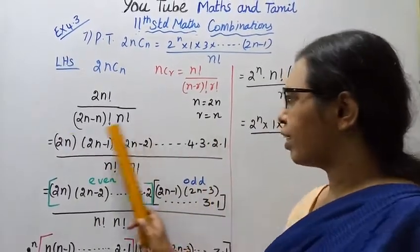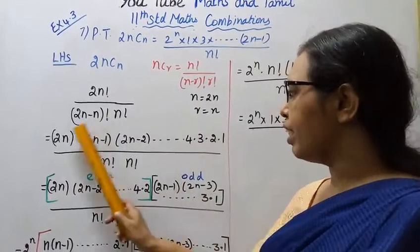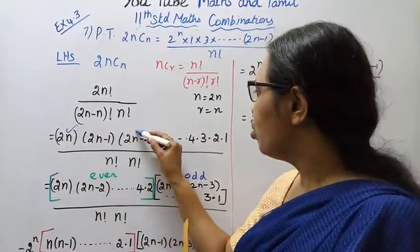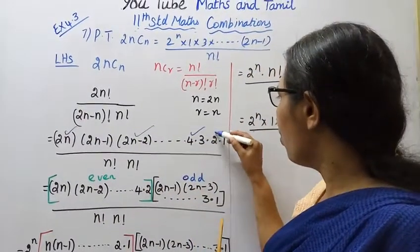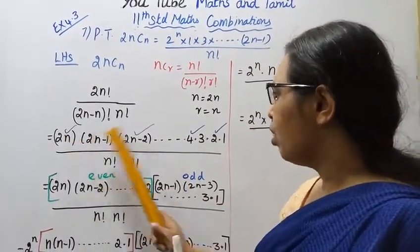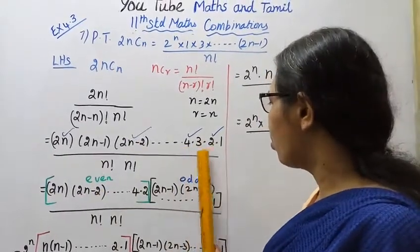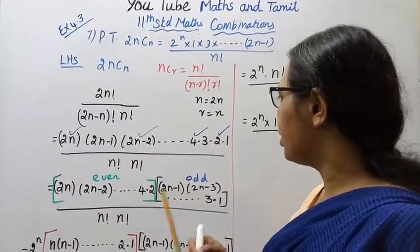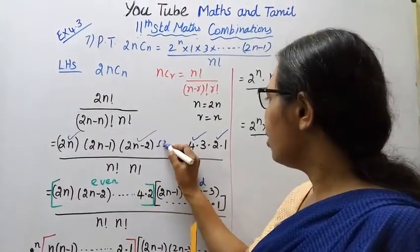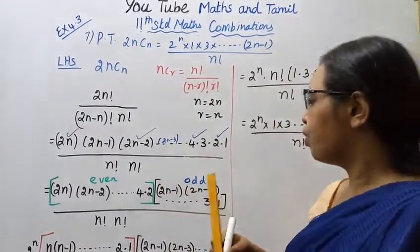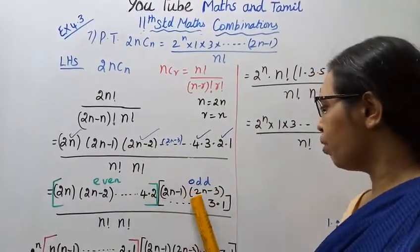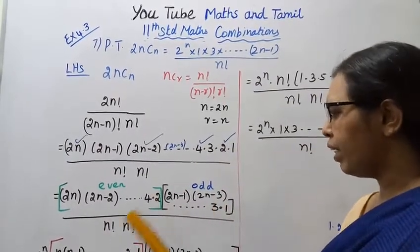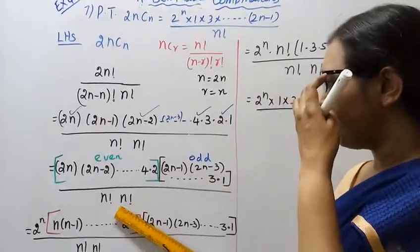Inside the expansion, we have a mix of odd and even numbers. We separate them. The even terms are: 2n, (2n minus 2), ..., 4, 2. The odd terms are: (2n minus 1), (2n minus 3), ..., 3, 1. So we write the odd terms separately: (2n minus 1)(2n minus 3)...3 into 1, divided by n factorial into n factorial.